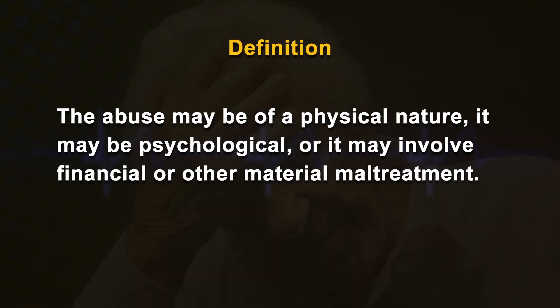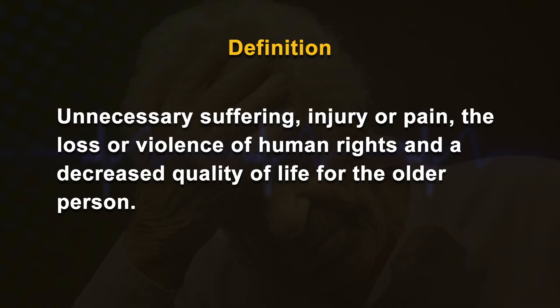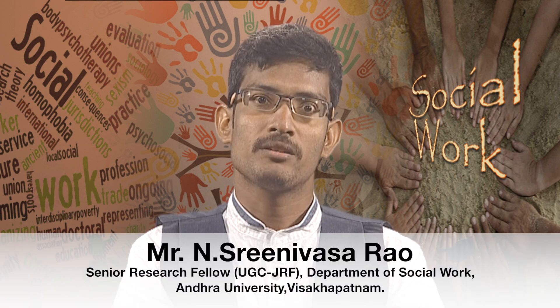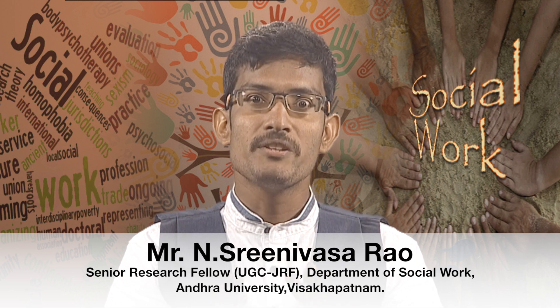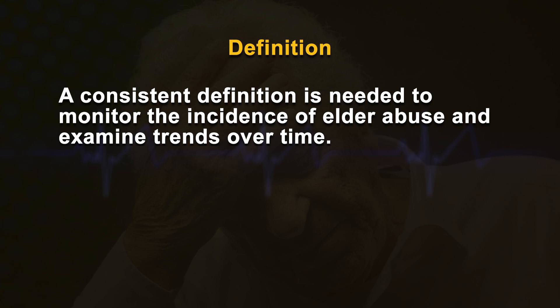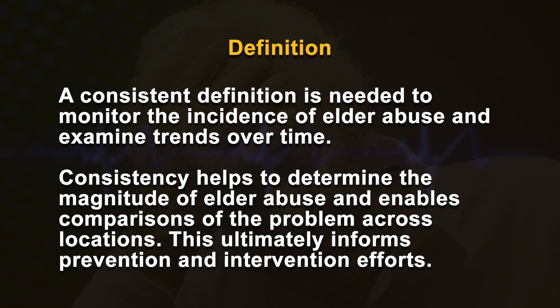It is generally agreed that abuse of older people is either an act of commission or omission, and may be intentional or unintentional. The abuse may be physical, psychological, or involve financial or material maltreatment. Regardless of type, it results in unnecessary suffering, injury or pain, loss of human rights, and decreased quality of life. Whether behavior is termed abusive, neglectful or exploitative depends on how frequently the mistreatment occurs, its duration, severity, consequences, and the cultural context.